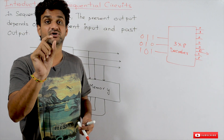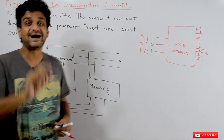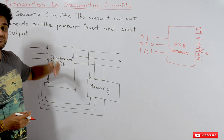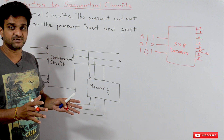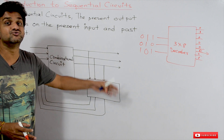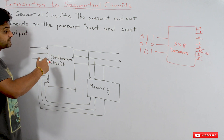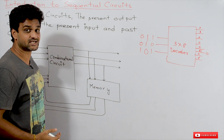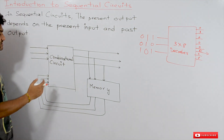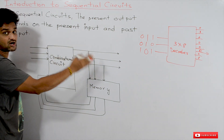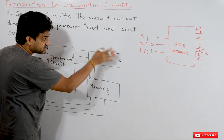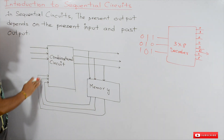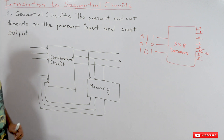That point is very important to understand. 'Past output' means: in a previous calculation, some value was obtained, and that value is used for the present calculation. So the sequential circuit depends upon the present input and also the past output in order to generate the current output.